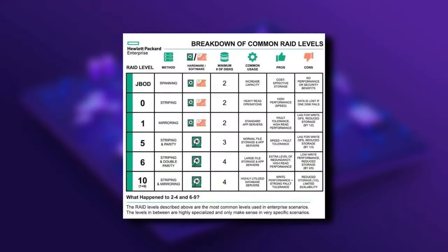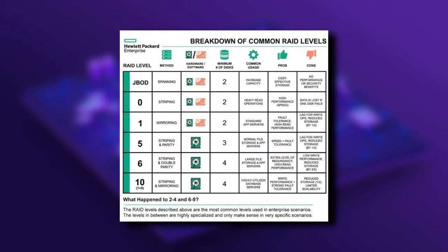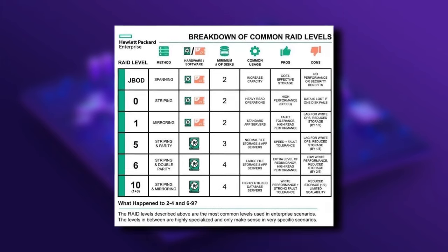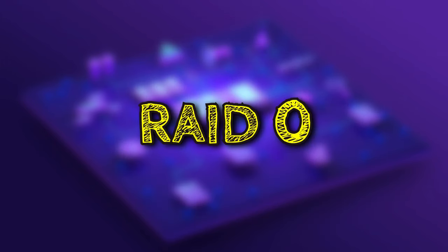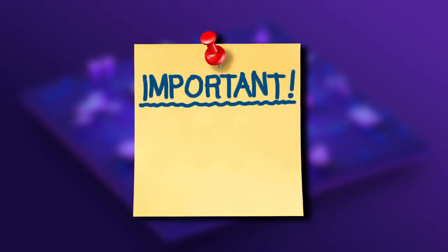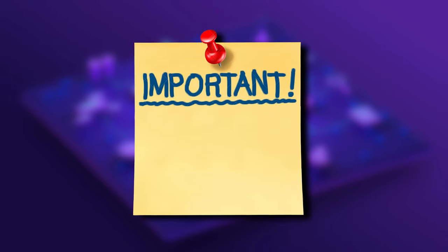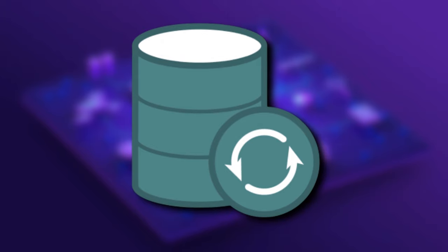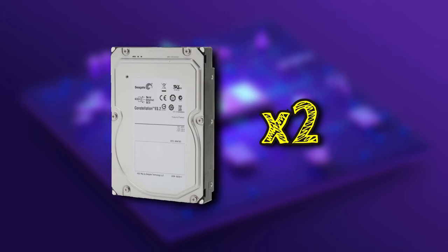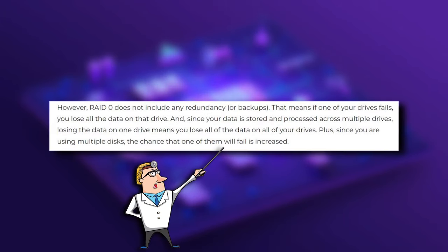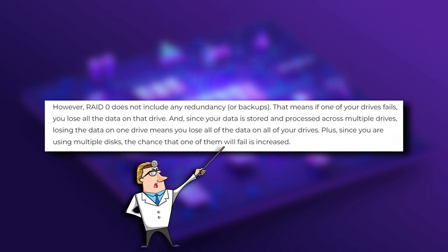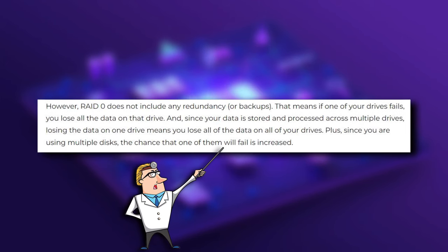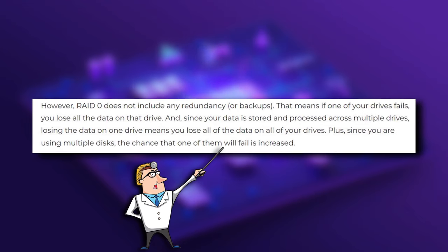There are different RAID configurations with different corresponding numbers. The first one we'll cover is RAID 0. It's important to note that in order to set up any level of redundancy, you're going to need at least two drives. It should be noted that calling it RAID may not be the most accurate label, as it doesn't provide any level of redundancy.